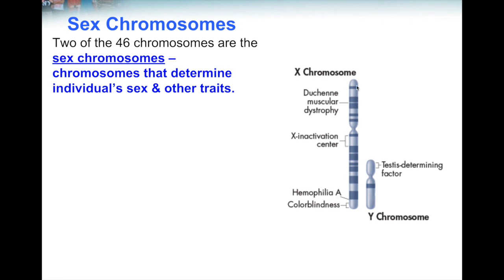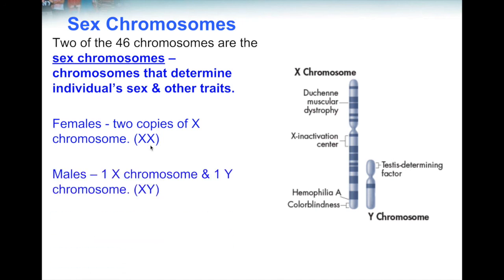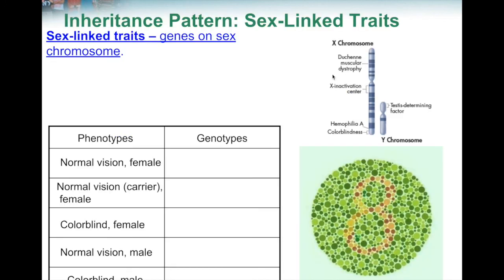The X chromosome is larger and carries more information, while the Y chromosome is smaller and doesn't have a lot of information. Everybody has an X chromosome, whether you're a man or woman. Women have two copies of the X chromosome — we say XX. For a man, he has an X chromosome and a Y chromosome, so we write his sex chromosomes as XY. We call these sex-linked traits because they are traits on the sex chromosome, specifically on the X chromosome.